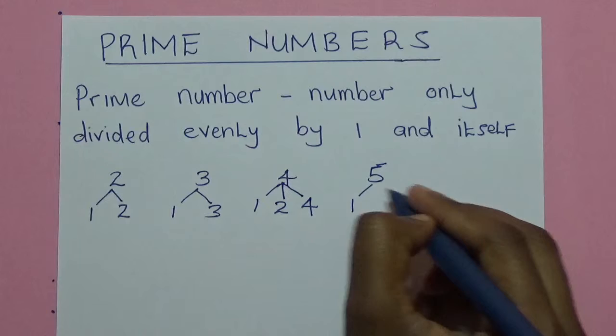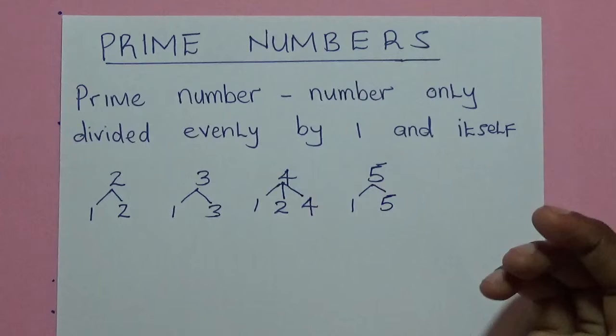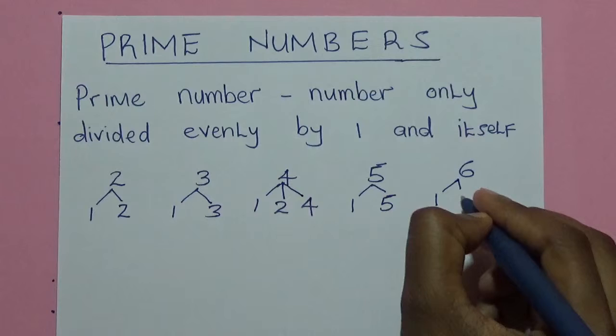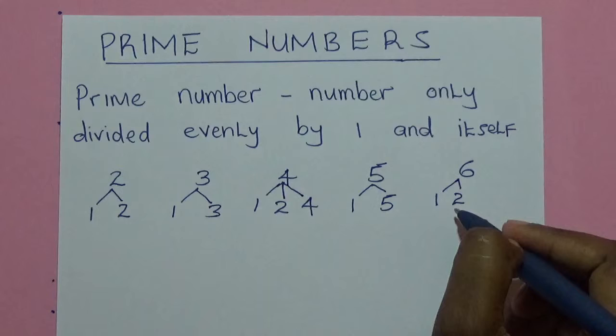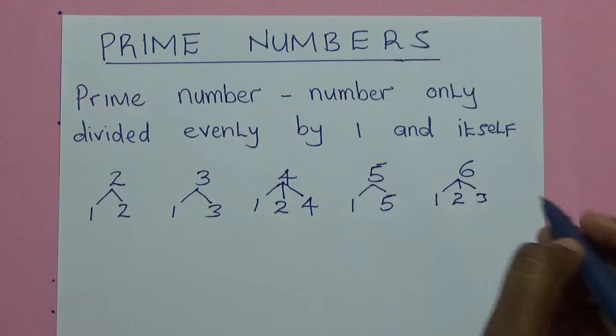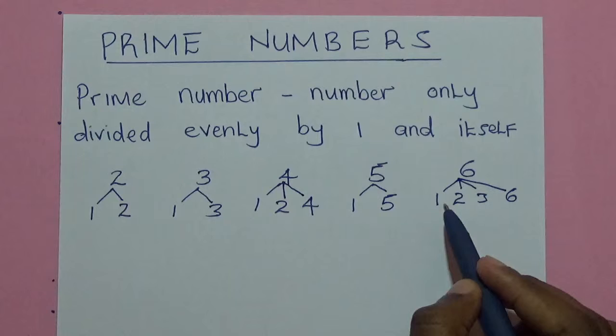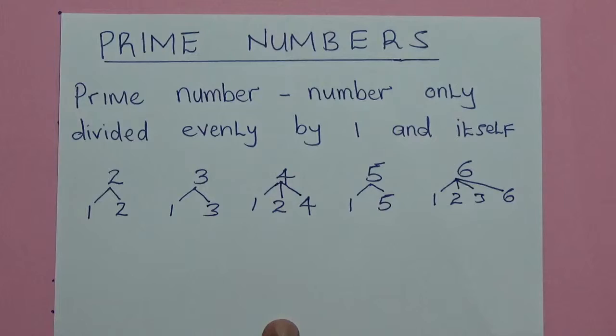5 can only be divided by 1 to get 5 and by itself to get 1. The next number is 6. 6 can be divided by 1 to get 6. It can also be divided by 2 — 6 divided by 2 will be 3. It can also be divided by 3 to get 2, and by itself which is 6. So 6 can be divided by 1, 2, 3, and 6.